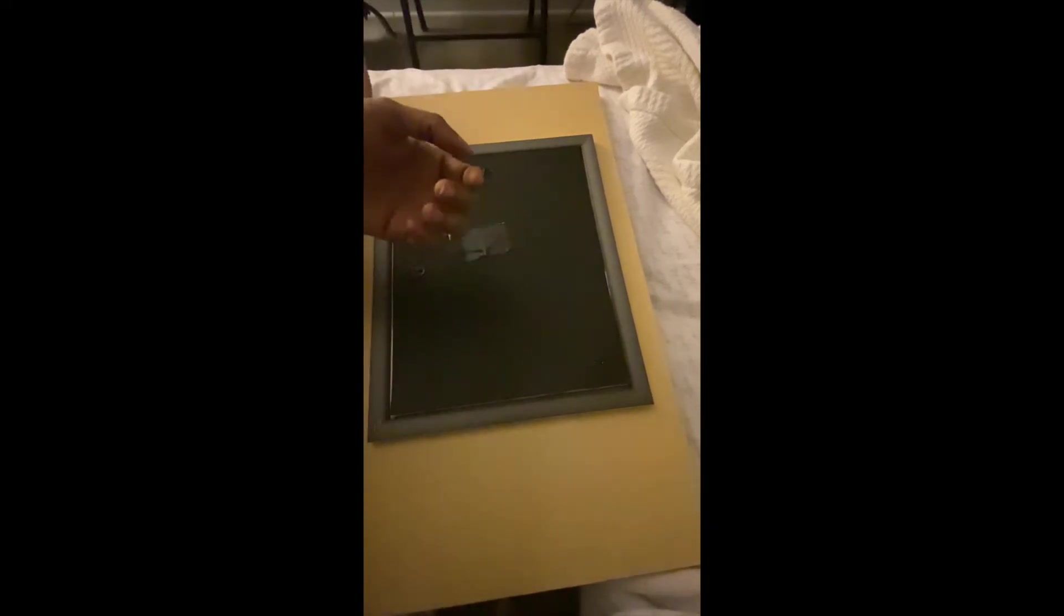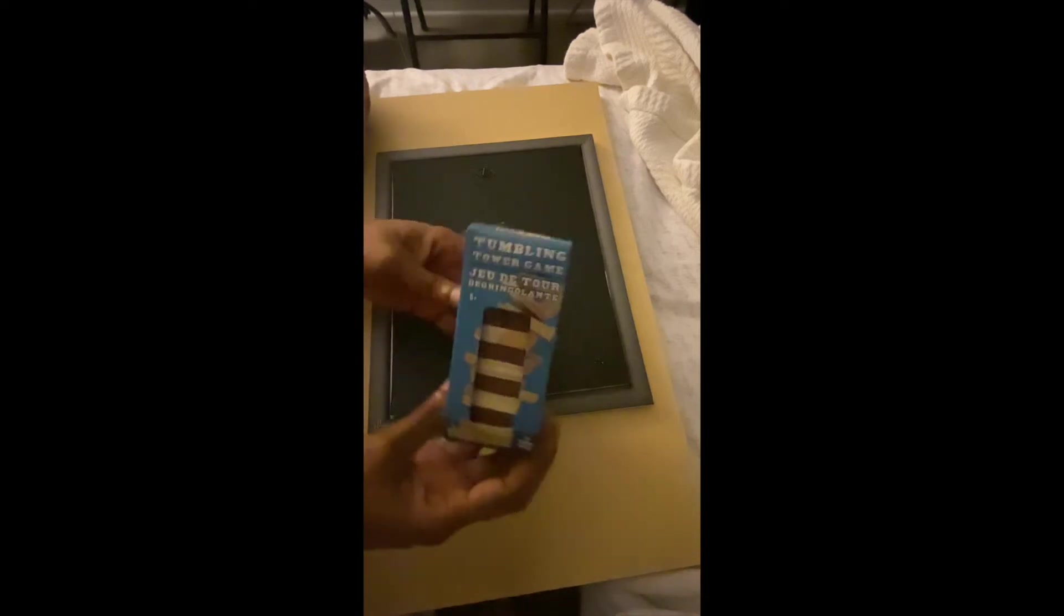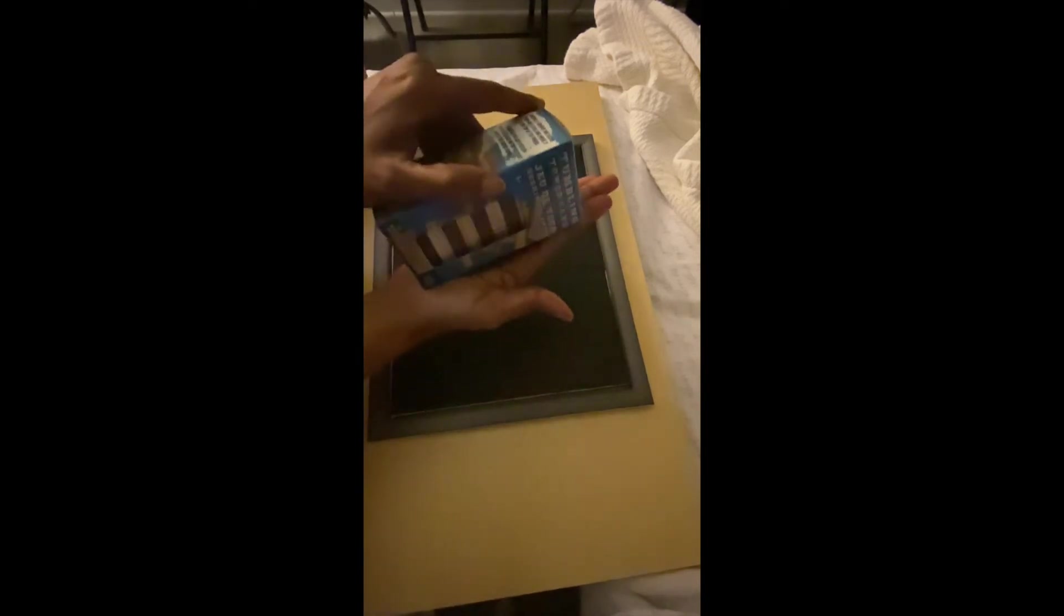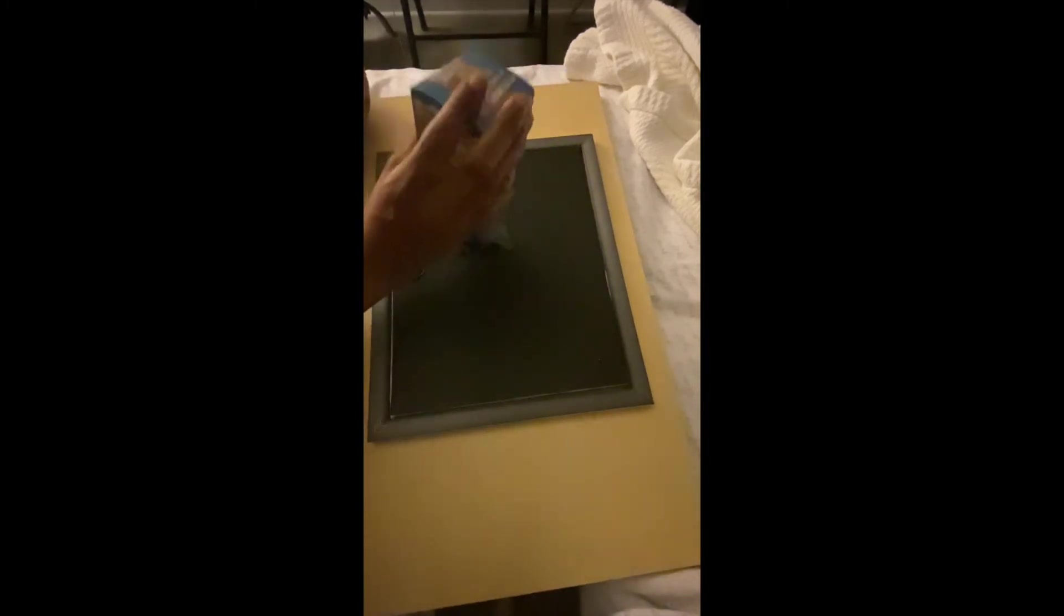So what I use is the tumbling tower blocks from Dollar Tree. They come with 36 in a box. For this project I believe I used about one and a half boxes to complete the entire project. And when I first saw these, I thought the box was huge, but it fits in the palm of my hand. Some stores have like a 72 count for a dollar. So if you can find those, go ahead and grab that. But I definitely used about one and a half boxes for this.